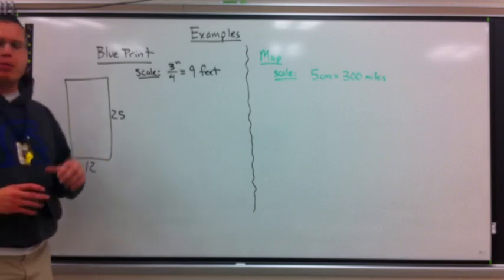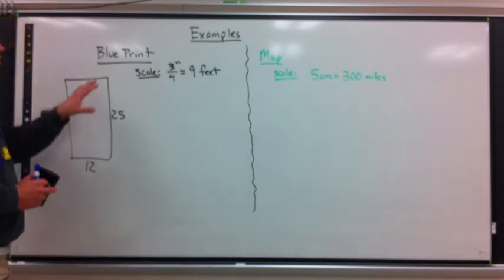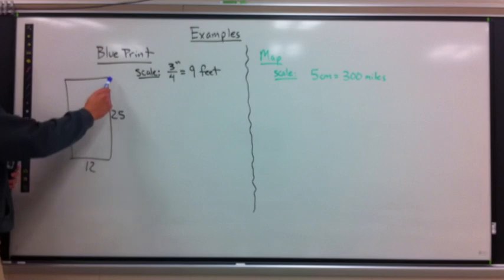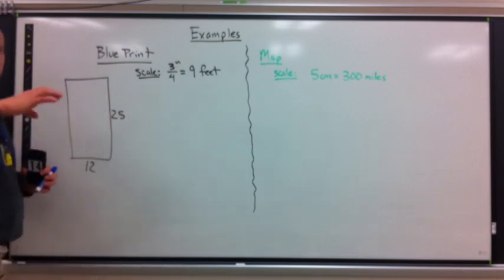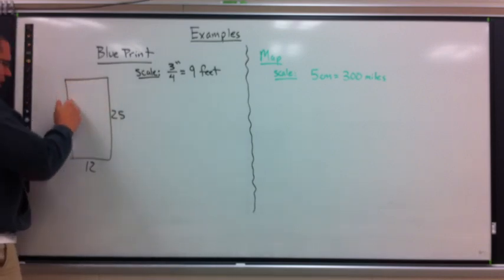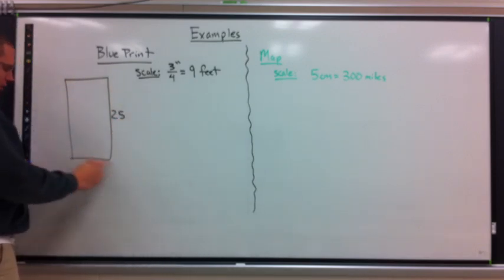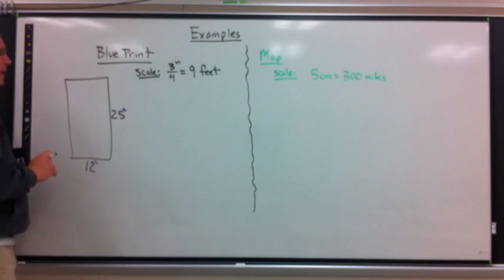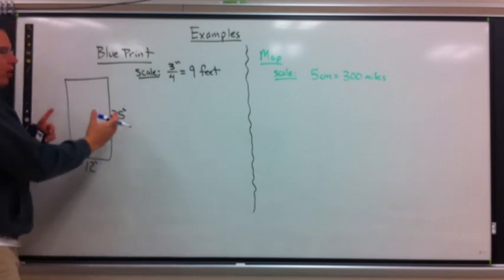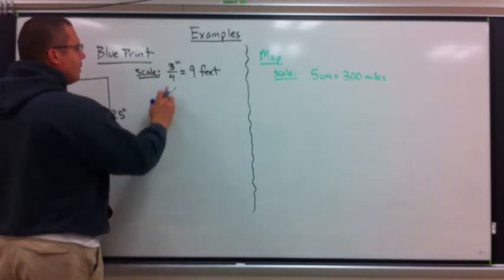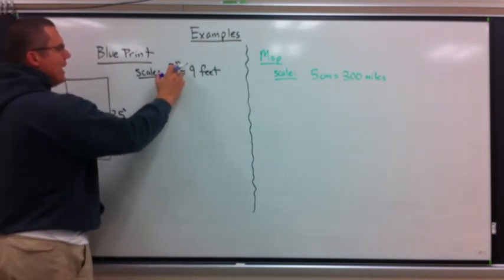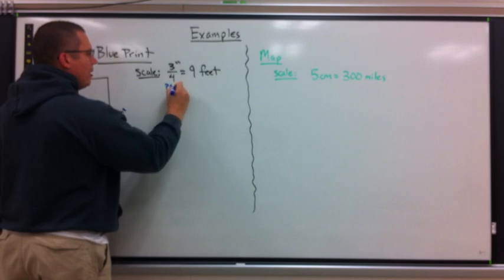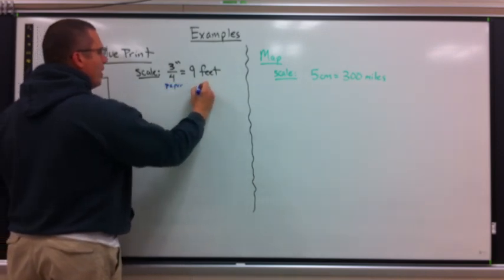Let's take a look at two examples. The first is how people make blueprints — a floor plan of a house as seen from above like a bird looking down. The house is a big rectangle: 25 feet long and 12 feet across. The scale given is three-fourths of an inch equals nine feet of real life. The smaller number is the paper number, and nine feet is the real-life number.